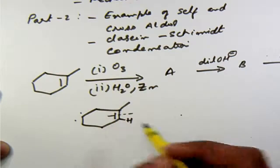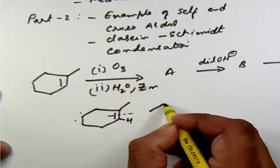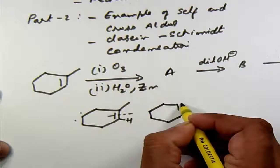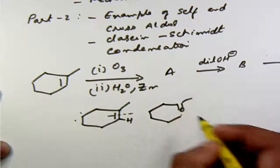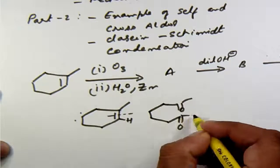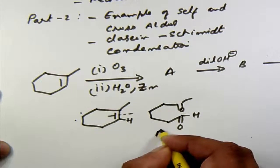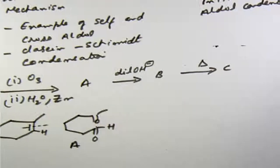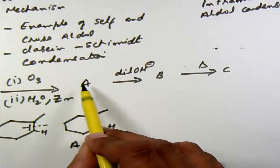And if you don't use zinc which we call oxidative ozonolysis then the aldehyde would have become the acid. So the product that we're going to get is going to be ketone here and an aldehyde here, so this is product A.